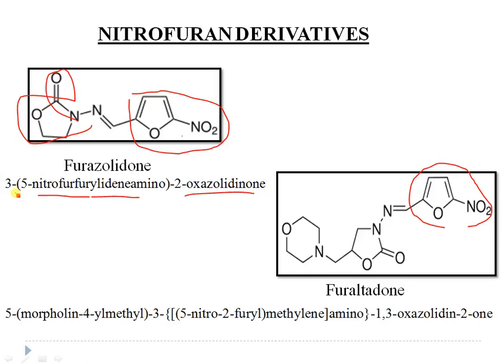The trade name of furazolidone is Furoxone. It is available as a yellow crystalline powder with a bitter taste, insoluble in water or alcohol. It acts as a bactericidal agent active against a broad range of intestinal pathogens including Staphylococcus aureus, E. coli, Salmonella, Shigella, and Proteus. It is also active against the protozoan Giardia lamblia and is recommended for oral treatment of bacterial and protozoal infections.